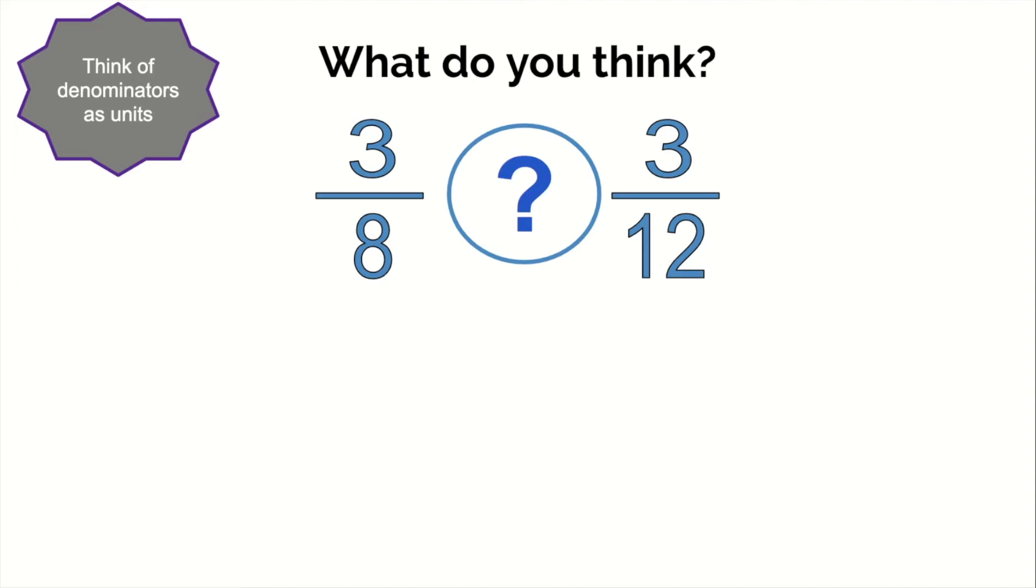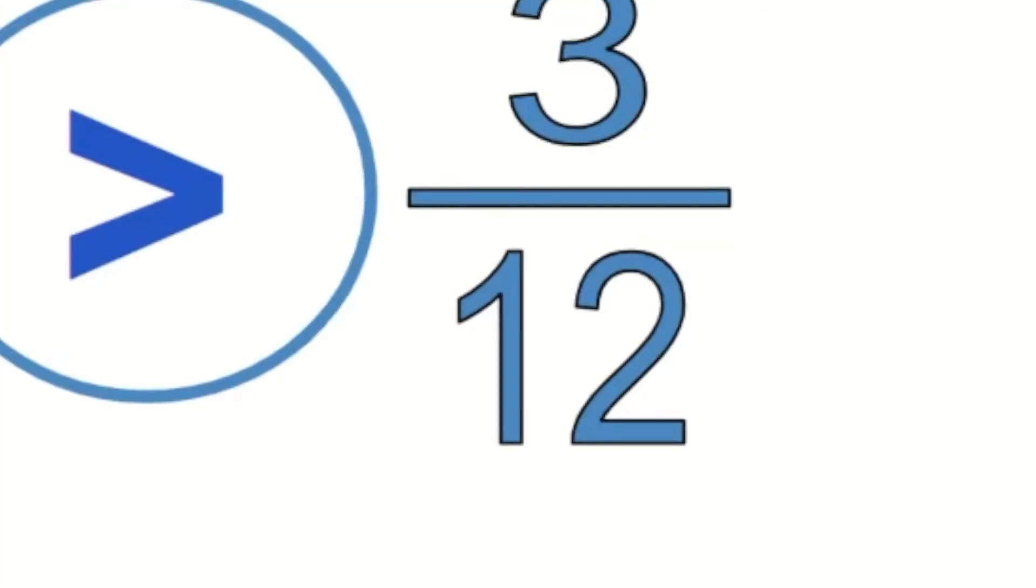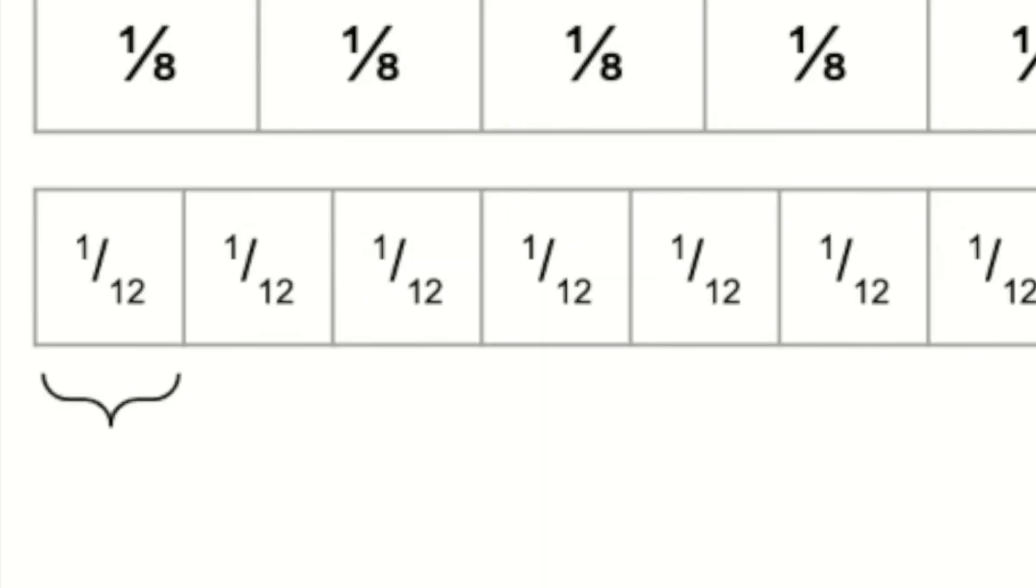So if you have three of each, three hours is obviously longer than three minutes. So you just need to know which of these denominators is greater. Three eighths is bigger than three twelfths because each of those eighths is larger than each of those twelfths. Remember, big denominators mean smaller parts.